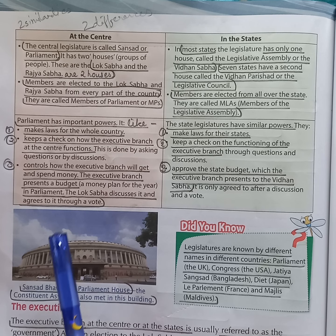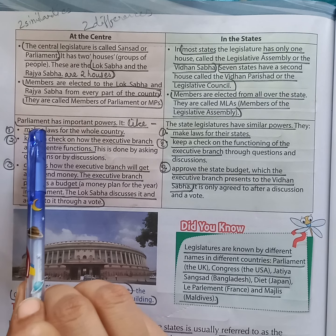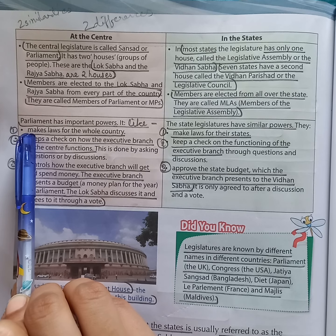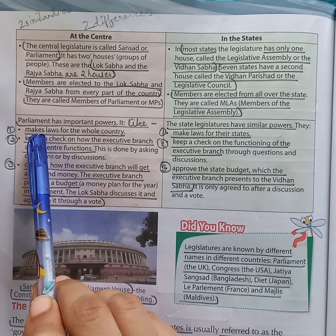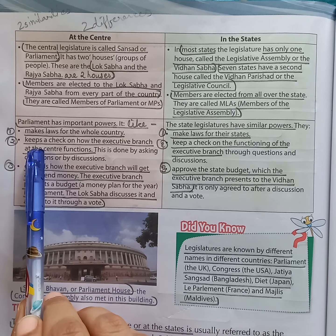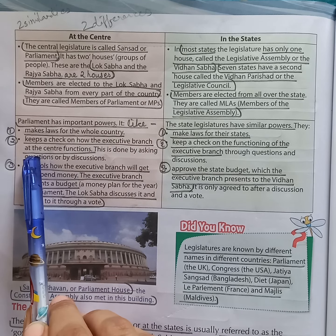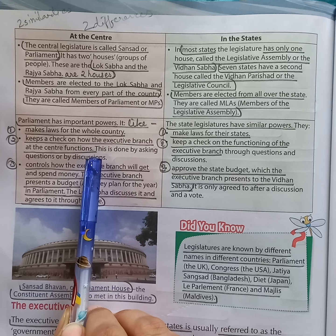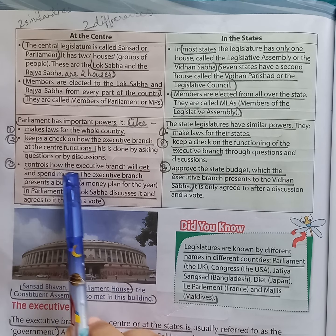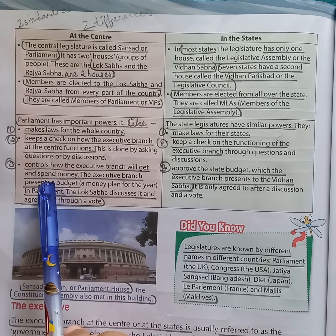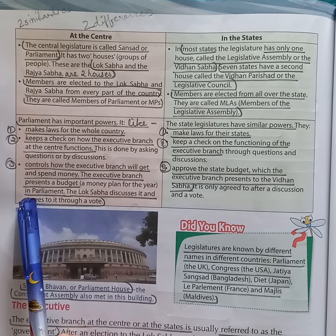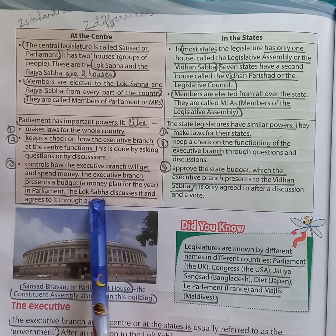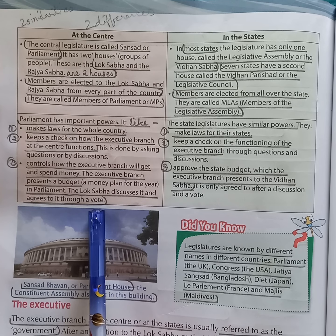Next question: what are the important powers of the Parliament? Answer: the important powers of the Parliament are — first, they make laws for the whole country; second, they keep a check on how the Executive Branch functions; third, they control how the Executive Branch will get and spend money. The Executive Branch presents a budget every year in the Parliament, and then the Lok Sabha discusses it and agrees to it through a vote.